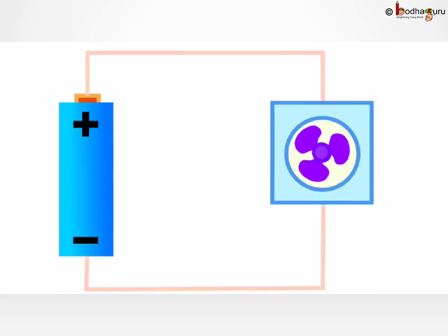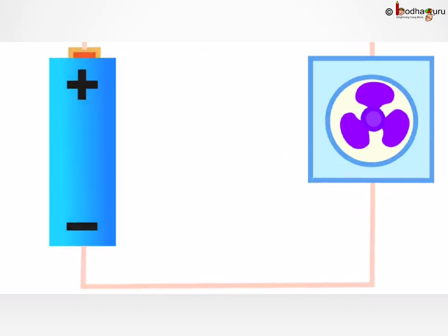So what happens now when we connect the battery to the wire? Let us focus only on the outermost shell of a few atoms of the copper wire.